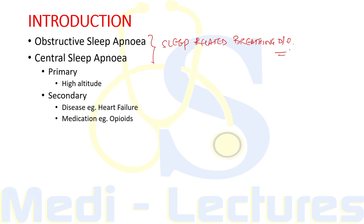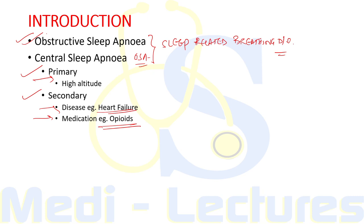The more common disorder is obstructive sleep apnea, which usually causes daytime sleepiness and impaired daily function. Central sleep apnea is less common and may occur alone or in combination with OSA. Central sleep apnea can occur as a primary condition, as a response to high altitude, or secondary to diseases like heart failure or due to certain medications like opioid drugs.